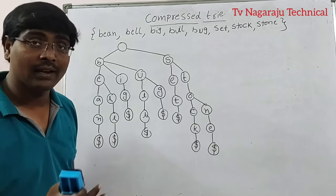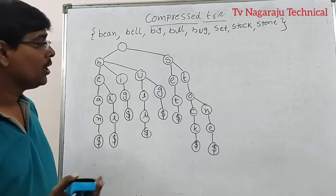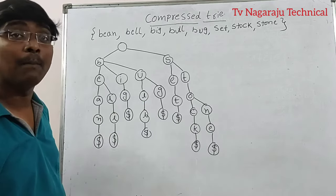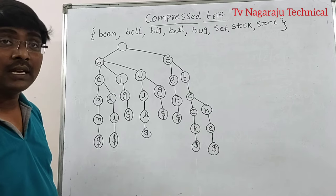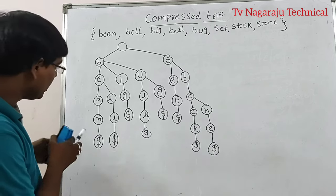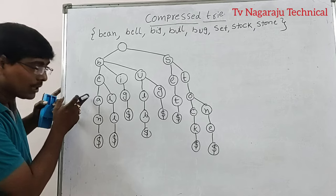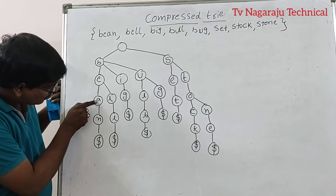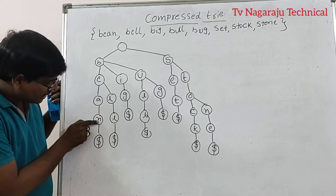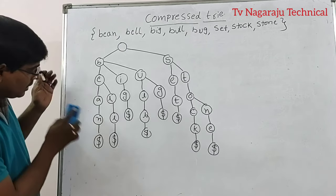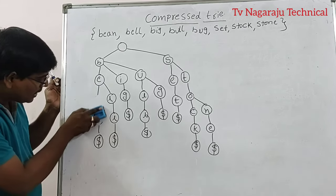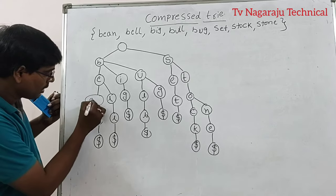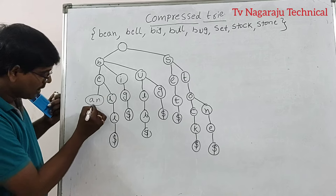Now your aim is to convert the standard trie into a compressed trie. The concept is: each and every node that has only one path from the parent — compress it. Observe: N comes from A with only one path. Combine A and N — giving the node A-N, followed by dollar.